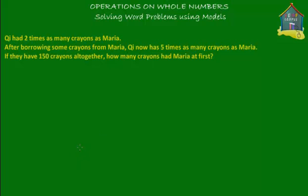Welcome to homecampus.com.sg. Here's another word problem on whole numbers for you. The word problem is: she had two times as many crayons as Maria. After borrowing some crayons from Maria, she now has five times as many crayons as Maria. If they have 150 crayons altogether, how many crayons had Maria at first?